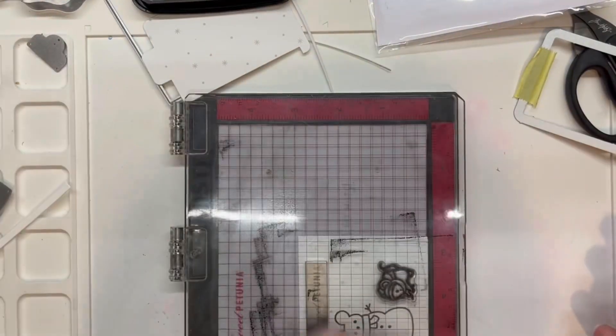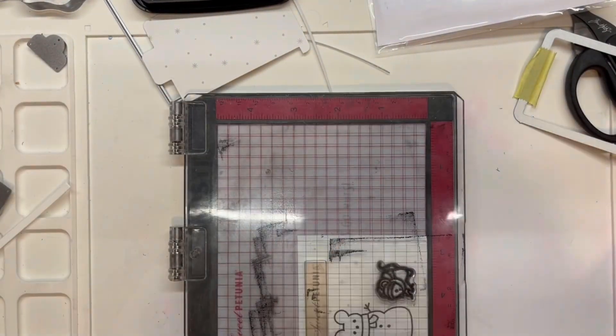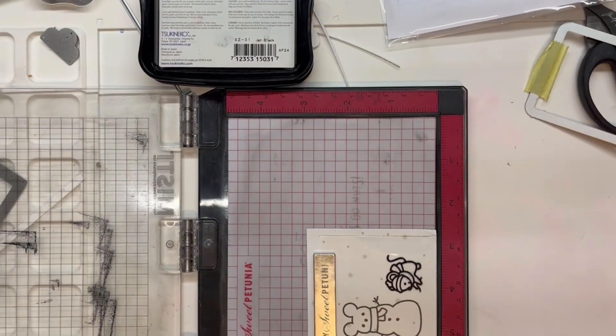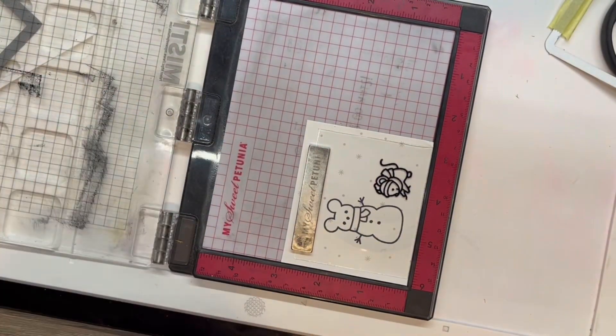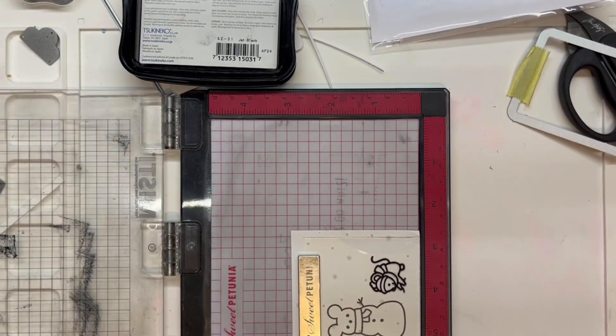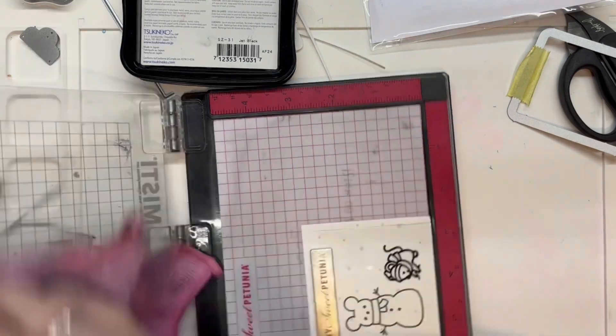I then used my MISTI to position a piece of acetate for the slider part of the card. In this scene you just see the mouse. I use StazOn ink in black for this as I am stamping on acetate. I make sure I clean my stamp well with the StazOn ink stamp cleaner.